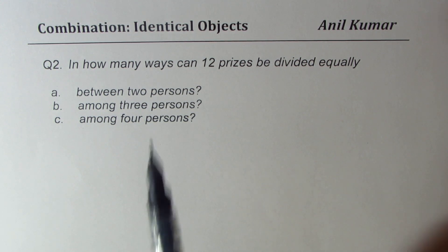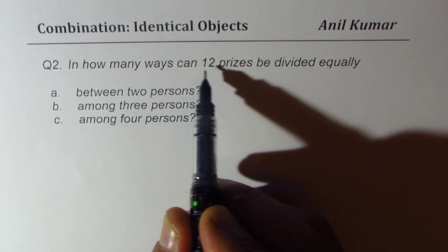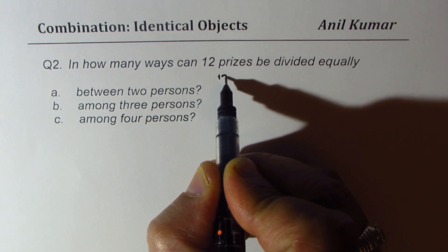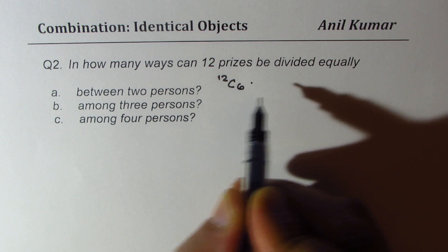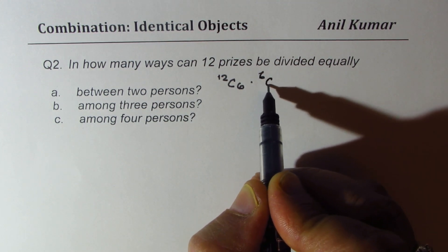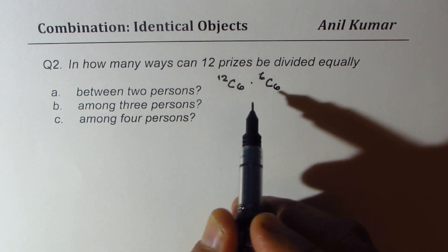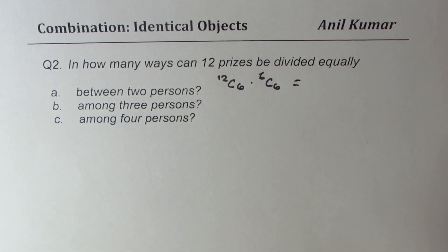Now when you divide prizes equally between two persons, then each is getting six. So that means for two persons, to the first person, we have to give six prizes. So that is, from 12, we have to choose six. And to the next person, six out of six. So all other six goes to the next person. So that becomes the answer for part A.